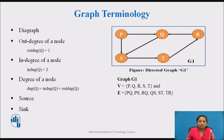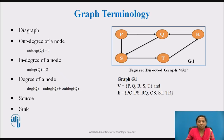A node is called a source node if it has a positive outdegree but its indegree is equal to 0. In this graph, outdegree of node p is 2 and indegree is 0, therefore p is a source node. A node is called a sink if it has a positive indegree but its outdegree is 0. If we assume there is no edge from node t to r, then t is an example of a sink node.